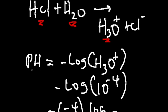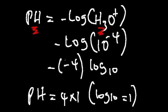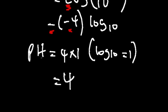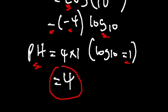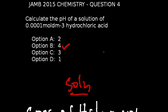pH is defined as the negative logarithm of the hydrogen ion concentration. So pH = −log(10⁻⁴), which gives us −(−4) × log 10. Since log 10 = 1, we get pH = 4 × 1 = 4. That corresponds to option B.